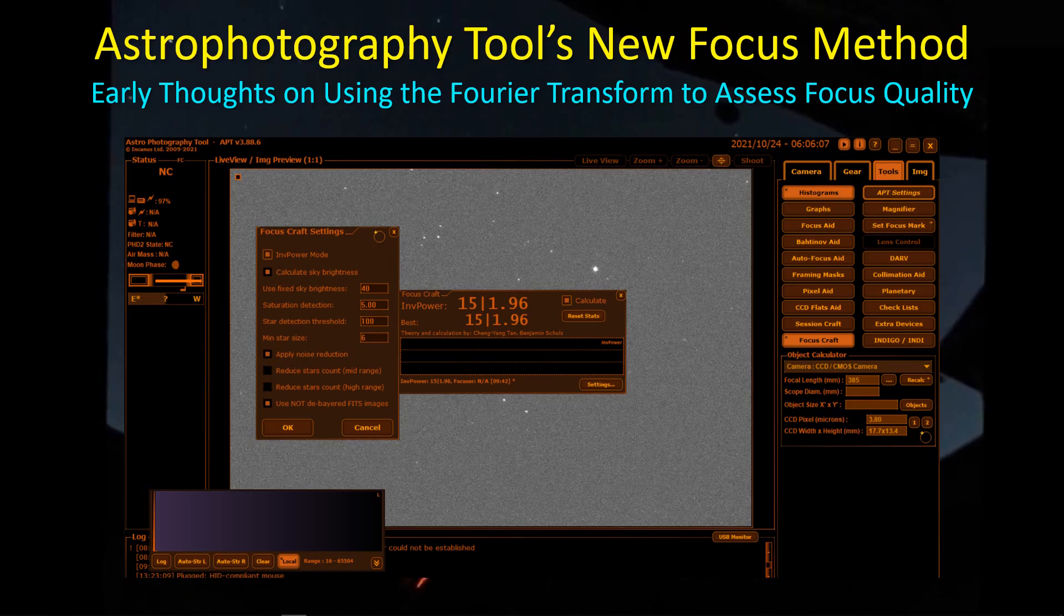Hey guys, welcome back. Well, guess what? I got an email the other day from APT saying they had a new release. I read about this new release. This is 1.88.6, and they have what they're playing around with now as an alternate focusing method called the Fourier method, in which they take advantage of the Fourier transform to transform the entire image and come up with an assessment of how good focus is.